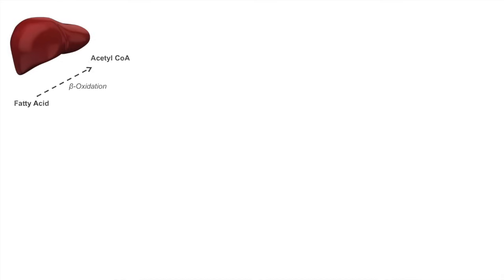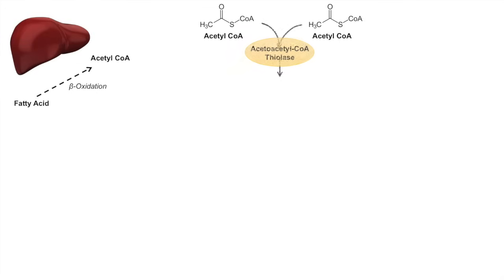As mentioned before, the primary location for ketone body synthesis is in liver hepatocytes, and this requires a high level of acetyl-CoA, which is the product of beta-oxidation of fatty acids. This is occurring in the liver. So once we have a high level of acetyl-CoA in a liver hepatocyte, the enzyme acetoacetyl-CoA thiolase will take two acetyl-CoAs and add them together to form acetoacetyl-CoA.